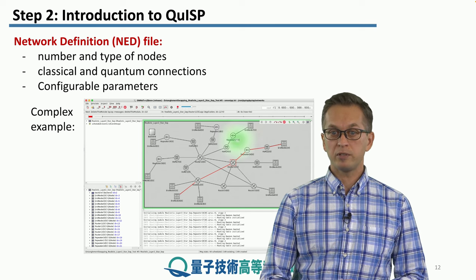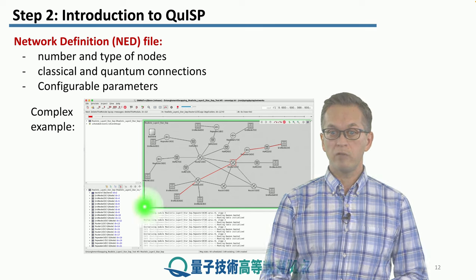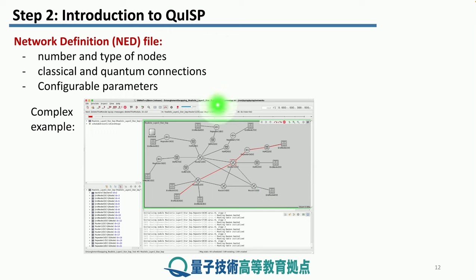This is a sample simulation of a fairly complex network, including many different end types of end nodes, as well as routers and repeaters.